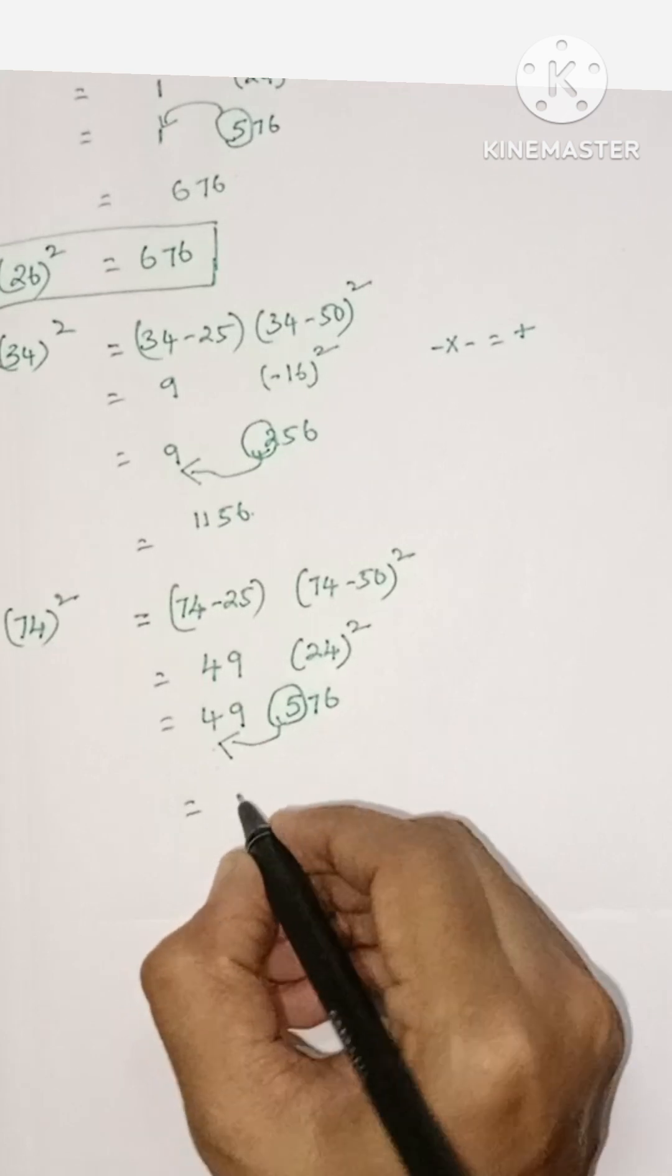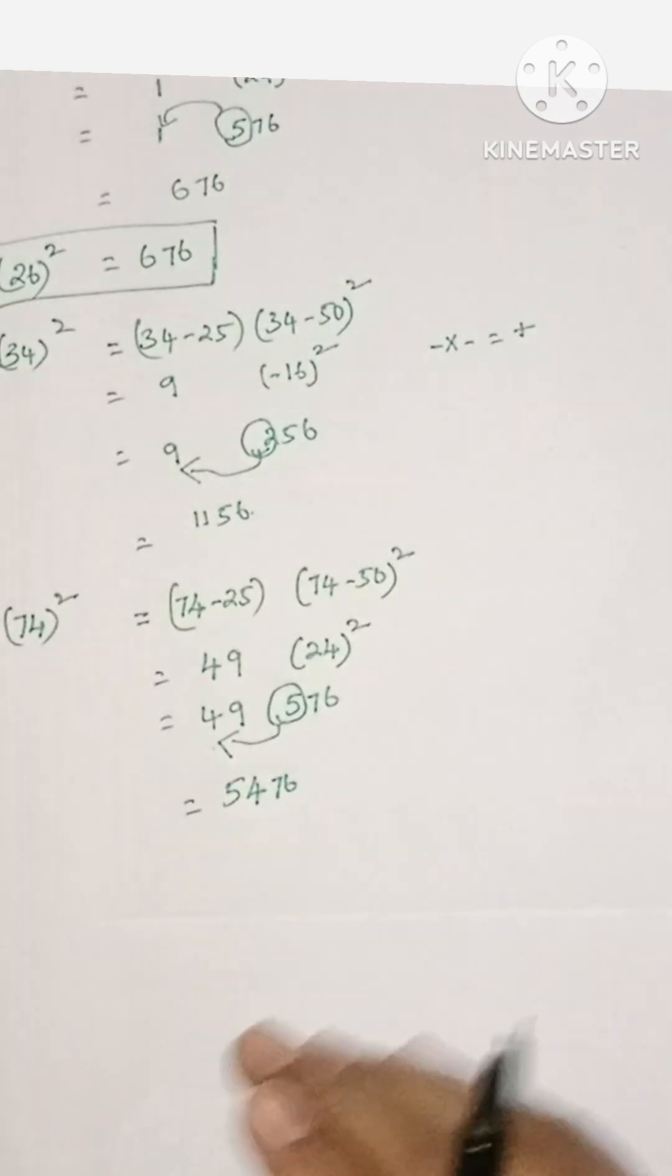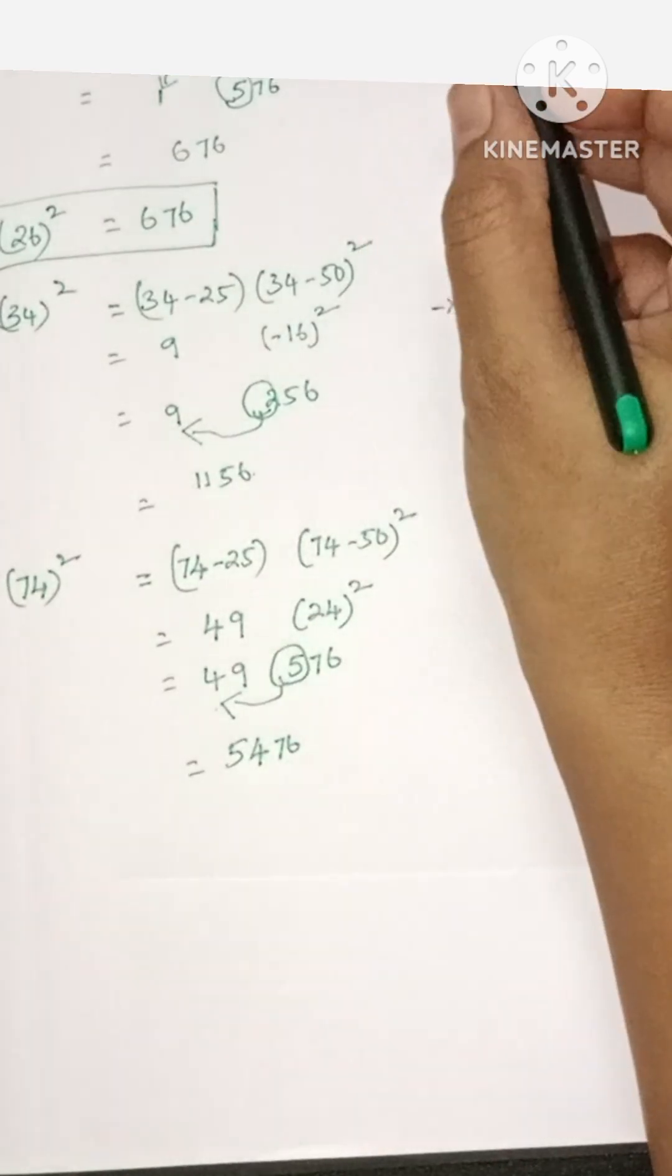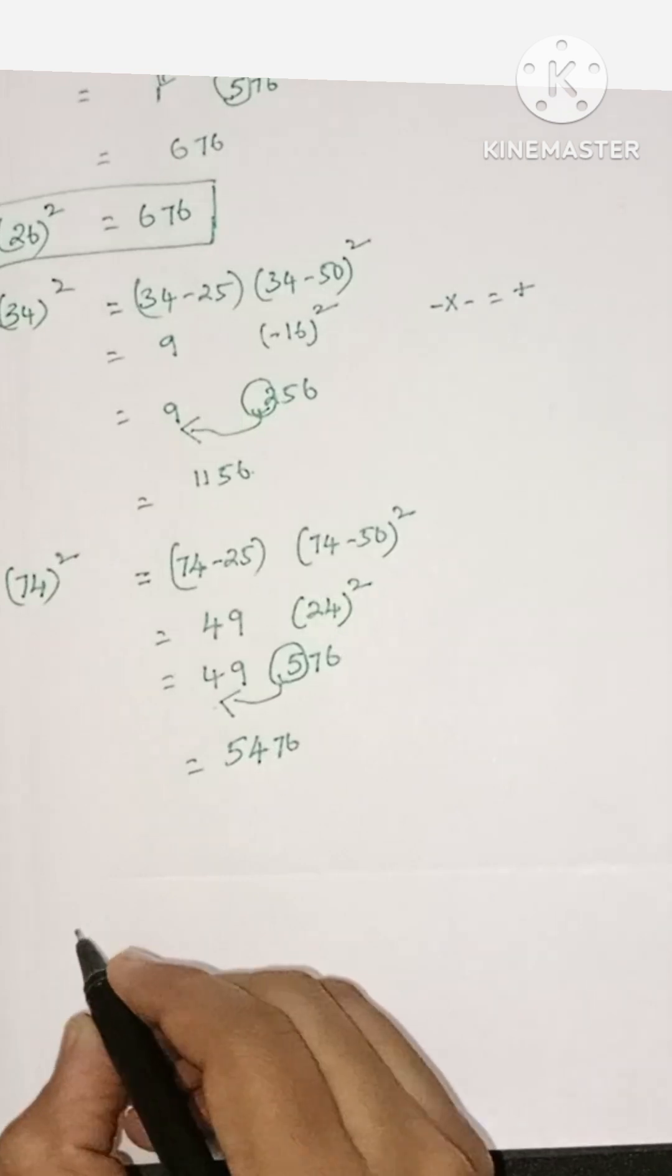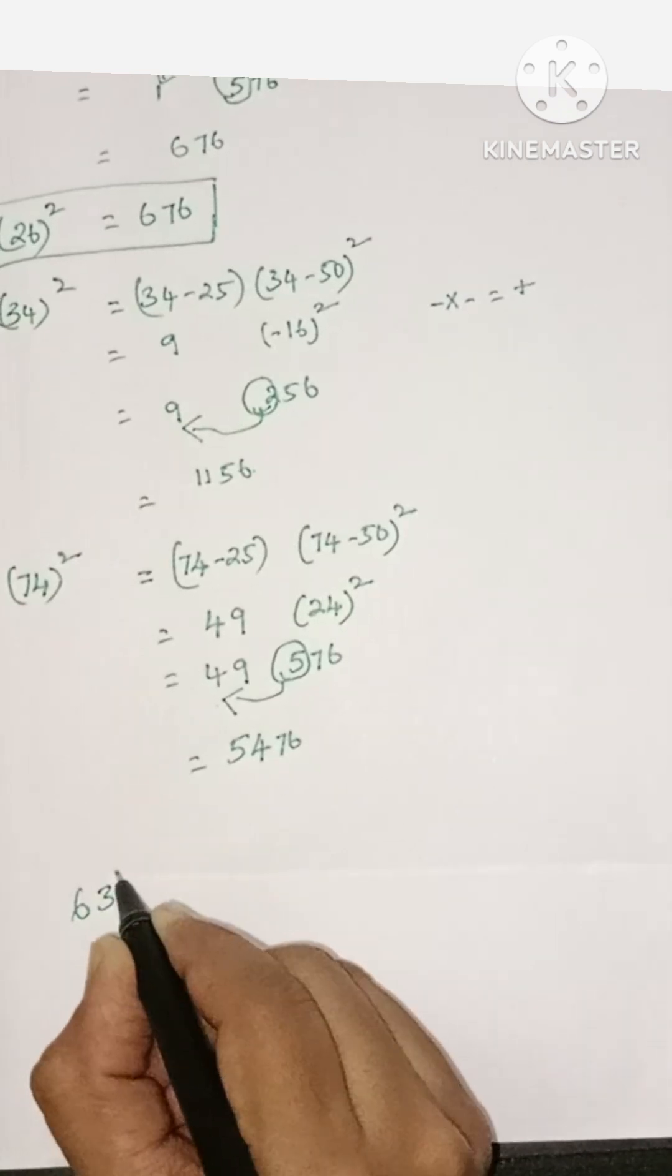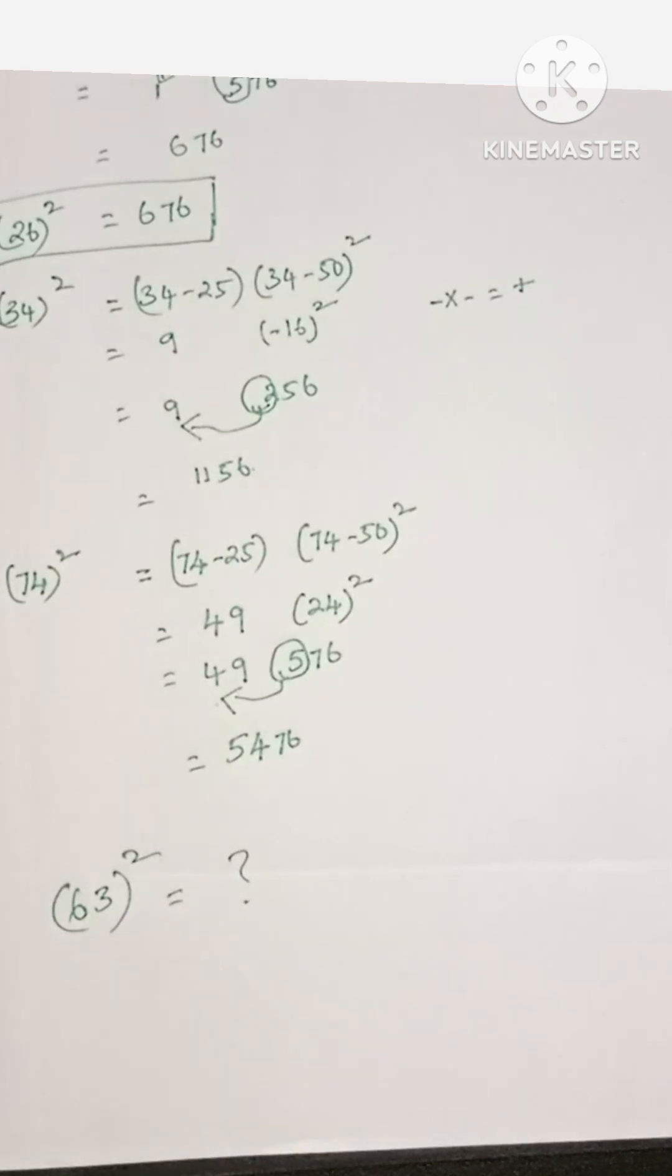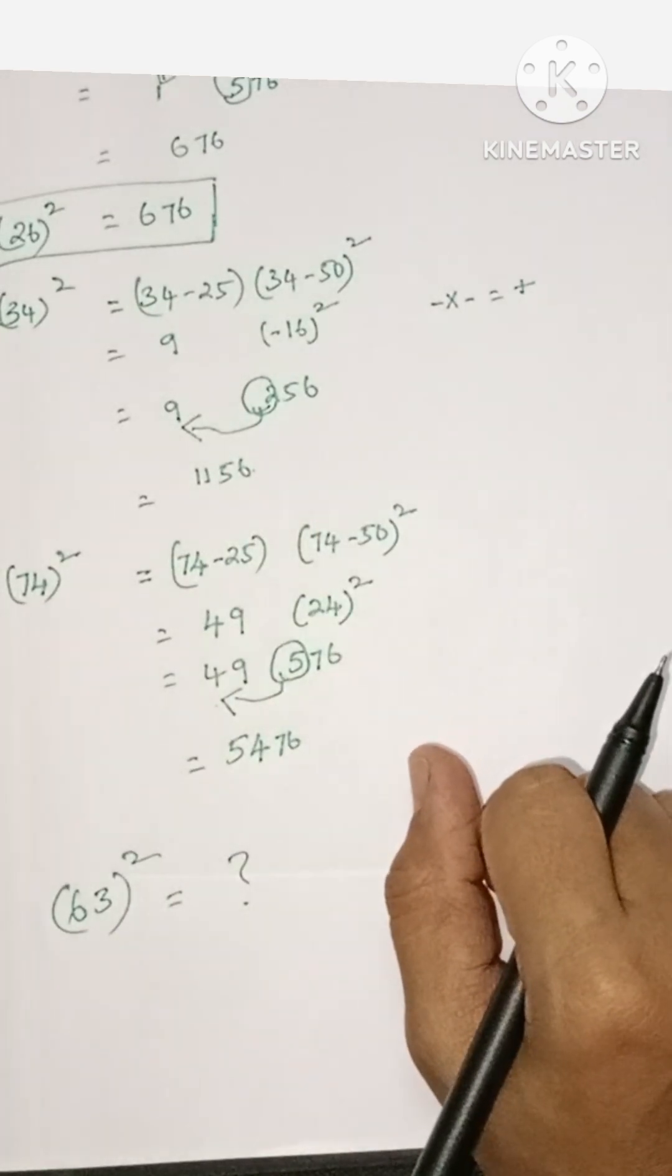So it's 5476, students. Like this you can easily calculate the square of a number from 25 to 75. Now just comment the answer: 63 whole square equals to how much? Students, please share this video with your friends, please like this video, and please subscribe to my channel. Thank you for watching.